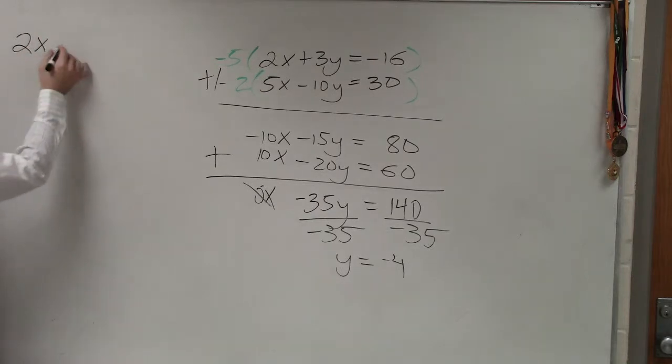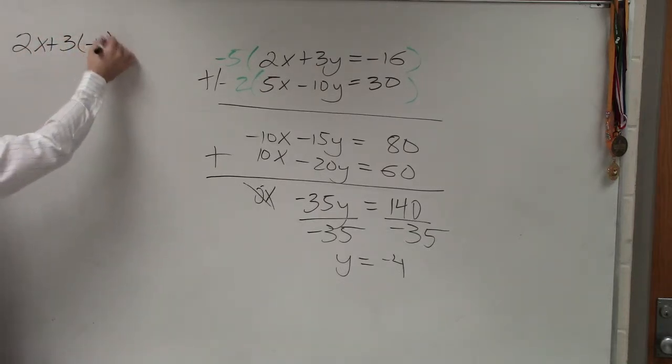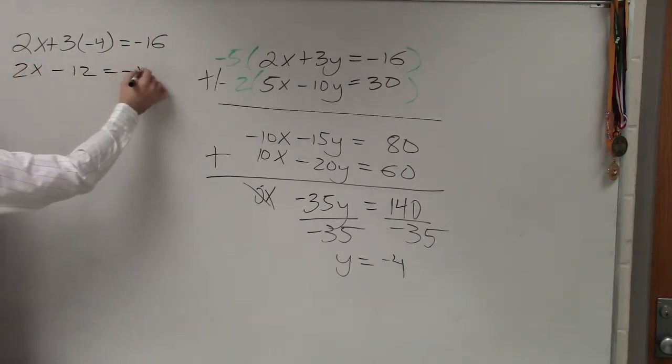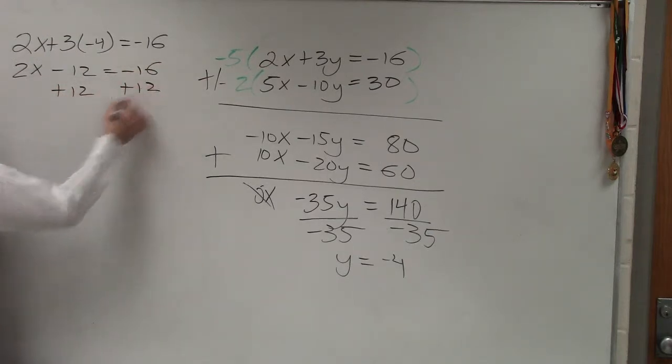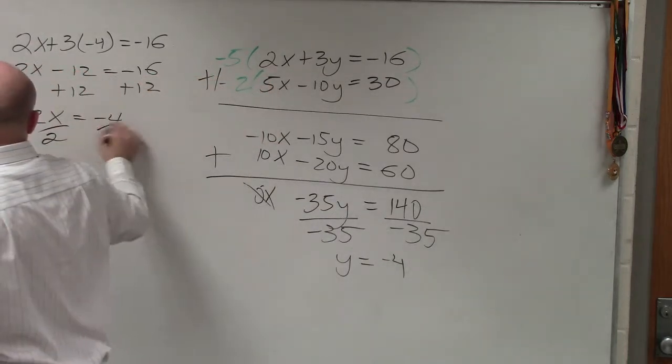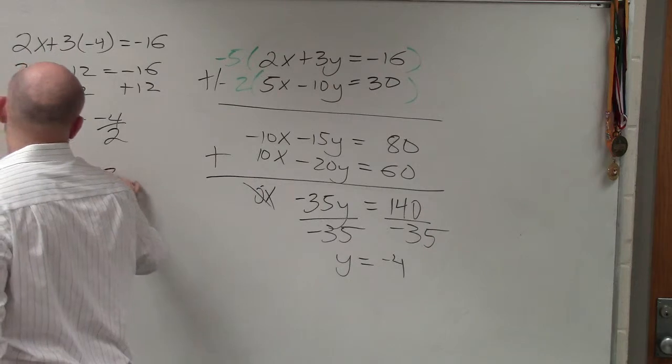So I have 2x plus 3 times y, which is negative 4, equals negative 16. 2x minus 12 equals negative 16. Add 12, add 12, 2x equals negative 4. Now I just divide by 2, divide by 2, x equals negative 2.